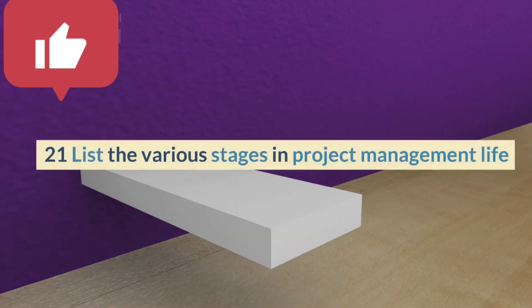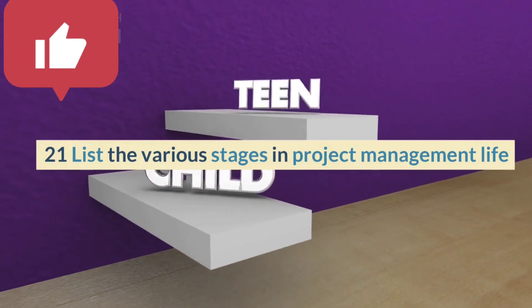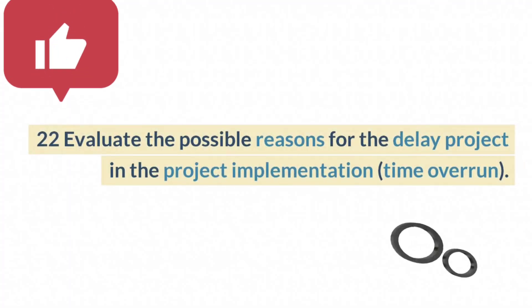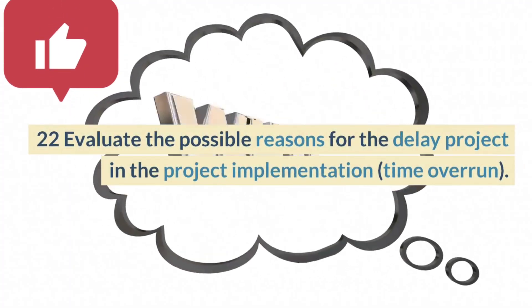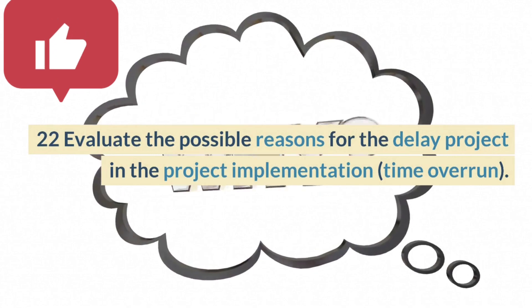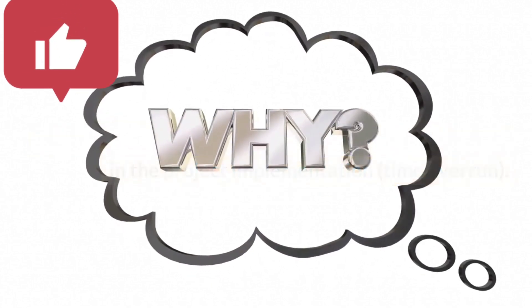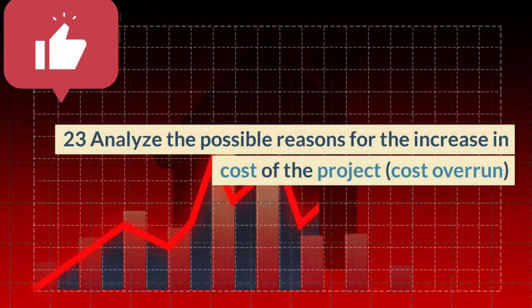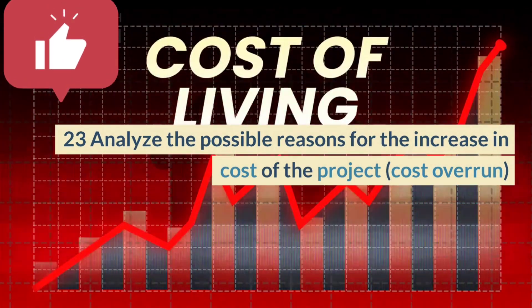Question 21: List the various stages in the project management life cycle. Question 22: Evaluate the possible reasons for delay in project implementation — time overrun. Question 23: Analyze the possible reasons for the increase in cost of the project — cost overrun.